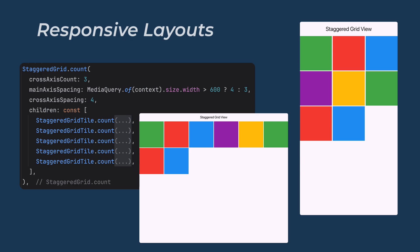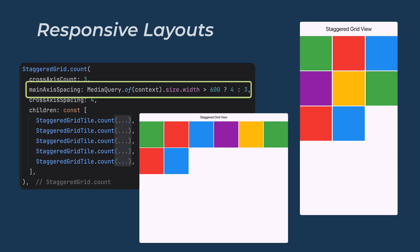In this example, the grid adjusts the number of columns based on the screen width. On larger screens like tablets, it uses 6 columns, while on smaller devices like phones it defaults to 3 columns. This ensures the layout remains responsive and looks great on all screen sizes.